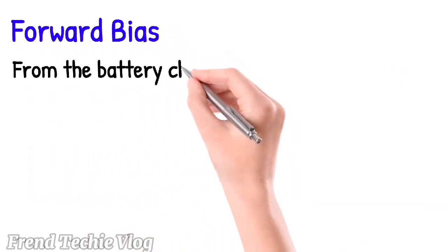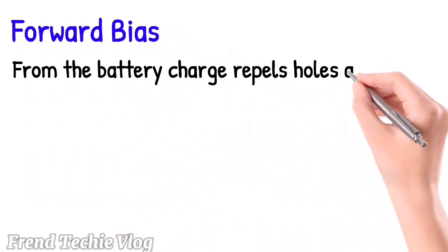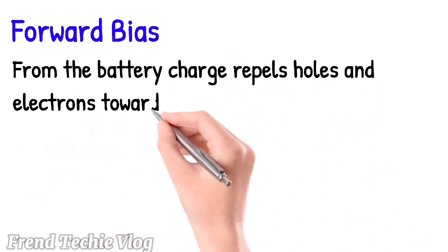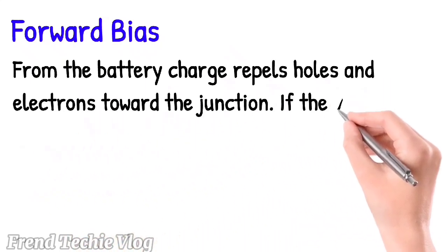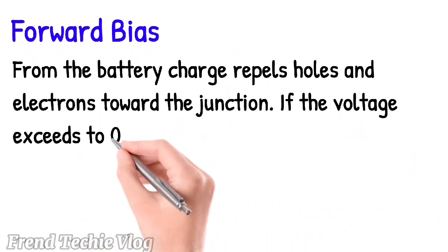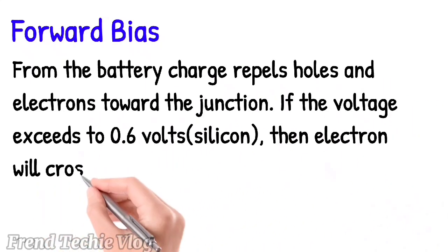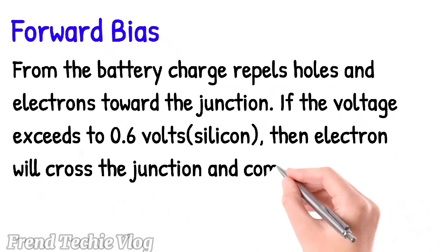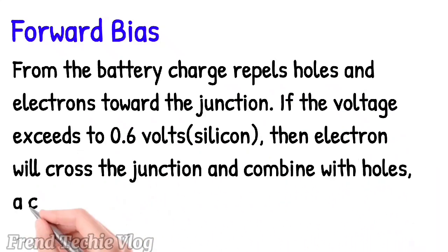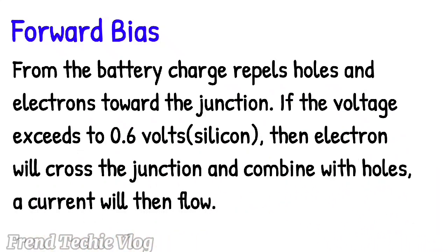Forward bias: The charge from the battery repels holes and electrons toward the junction. If the voltage exceeds 0.6 V for silicon, electrons will cross the junction and combine with holes. A current will then flow.